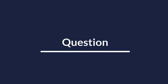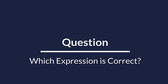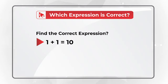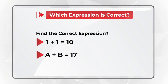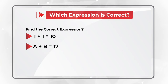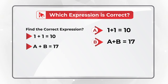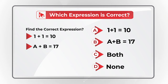Here's a very unusual question which is frequently used in a test. You need to find the correct expression. You're presented with: first choice, 1 plus 1 equals 10; and second choice, A plus B equals 17. You have four different options: Choice A, 1 plus 1 equals 10 is the correct expression; Choice B, the correct expression is A plus B equals 17; Choice C, both of these expressions are correct; and Choice D, none of these expressions is correct.